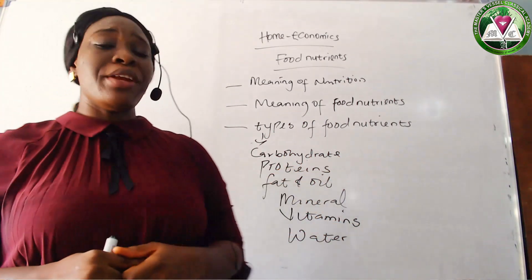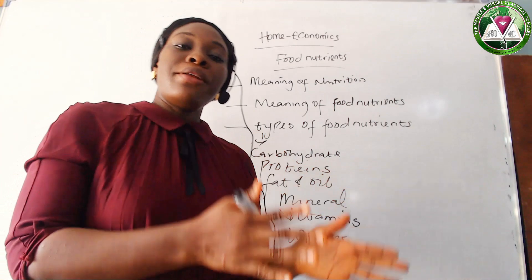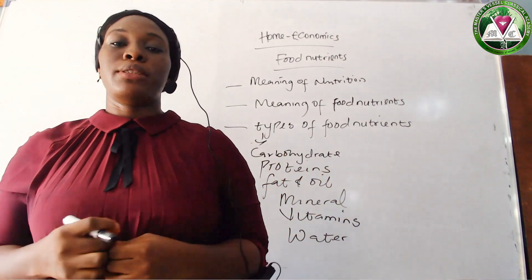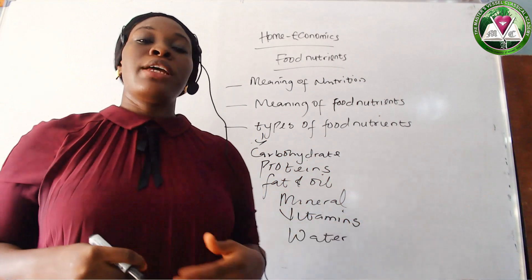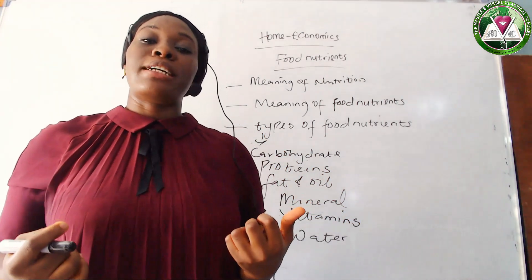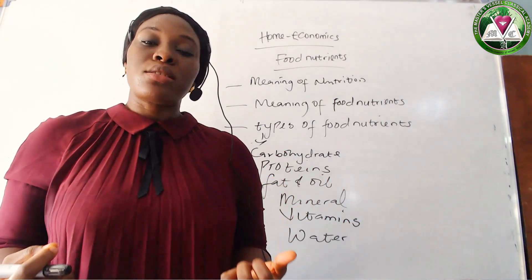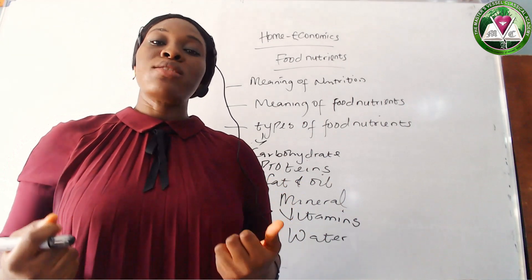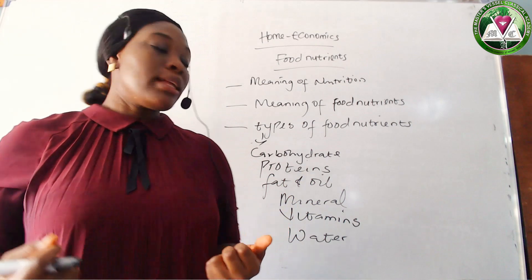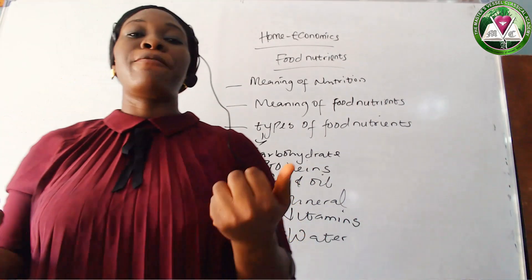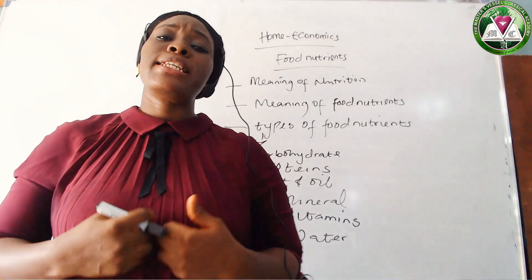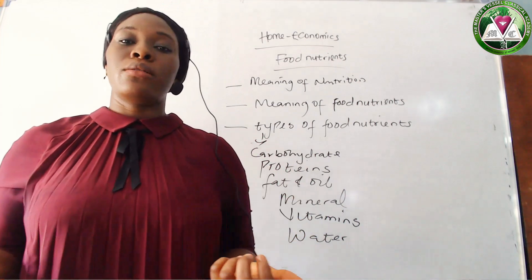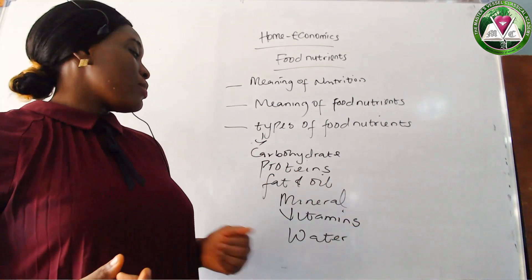The next one is minerals. Minerals and vitamins are protective foods. One of the functions of minerals is that it promotes strong bones and teeth. The food sources of minerals include fruits, meat, and milk — these all contain minerals.